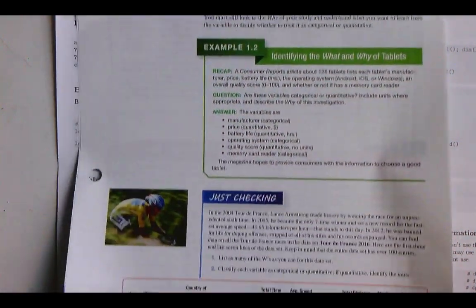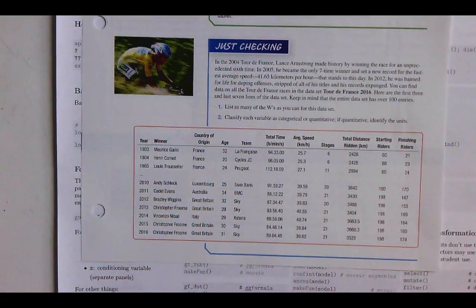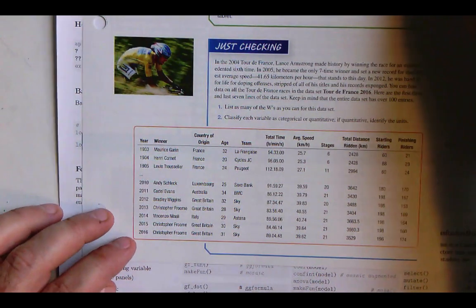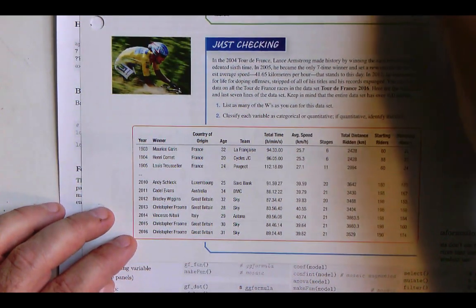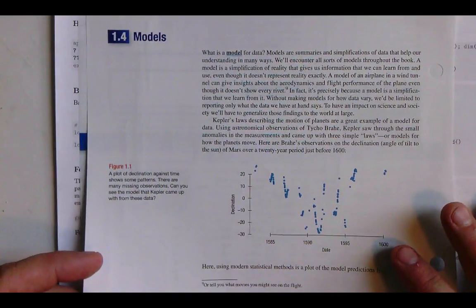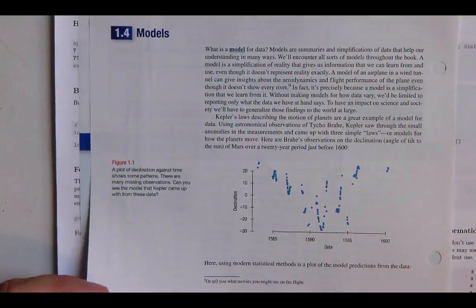The chapter closes with a just checking. These are useful ways of thinking about examples in the textbook. Here we have an example from the Tour de France, and that is actually something we're going to be picking up when we think about the next set of materials for this in just a moment.